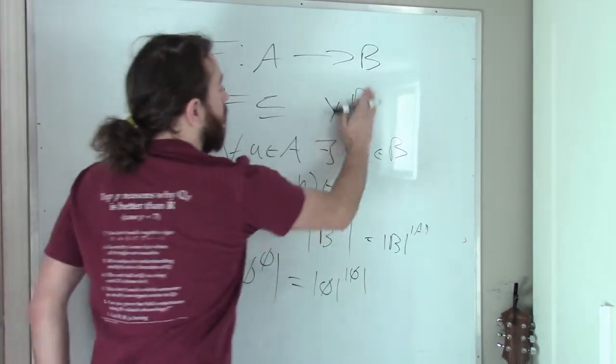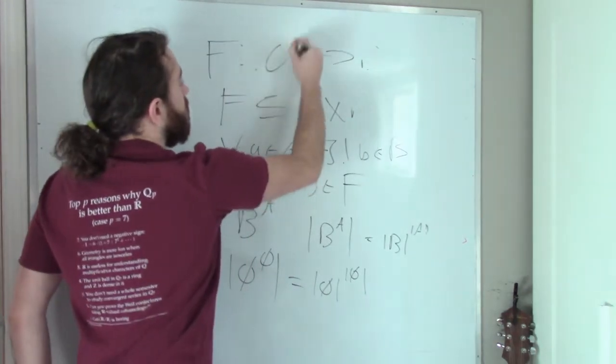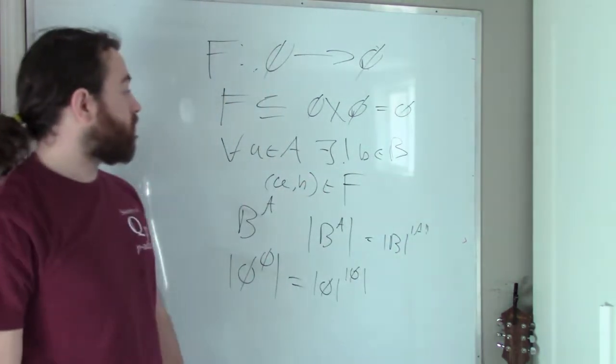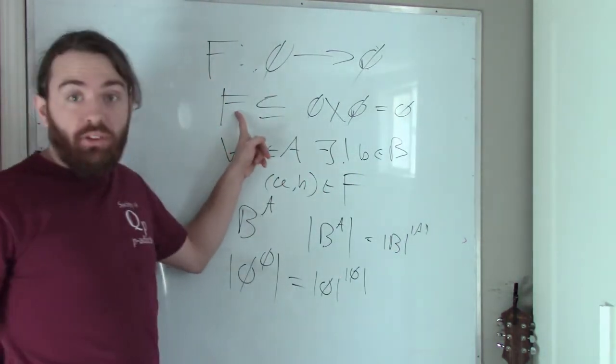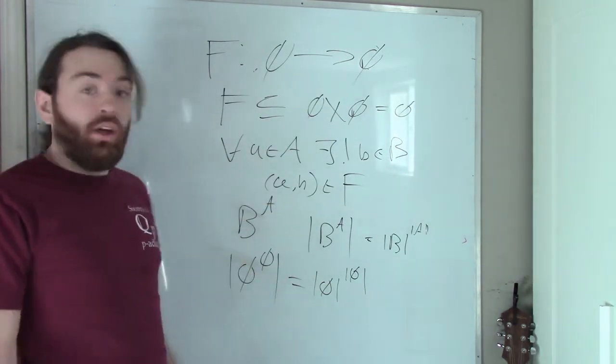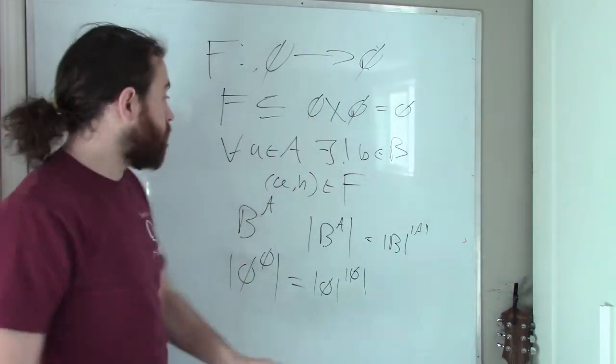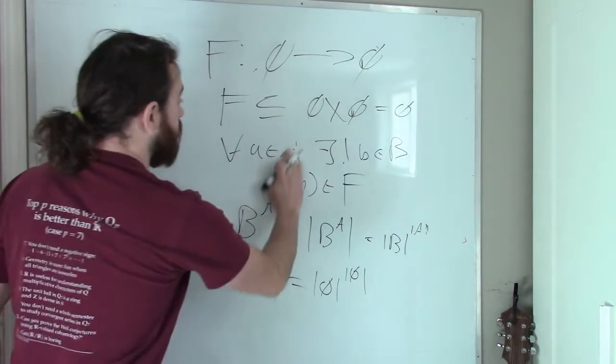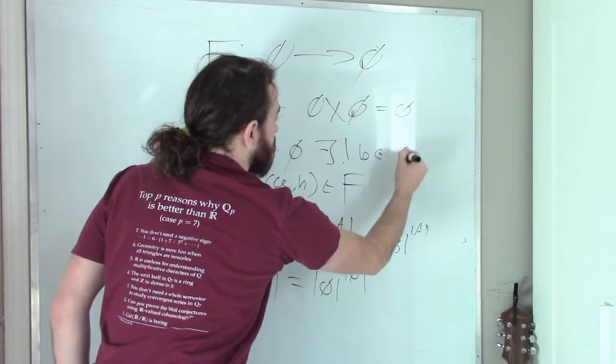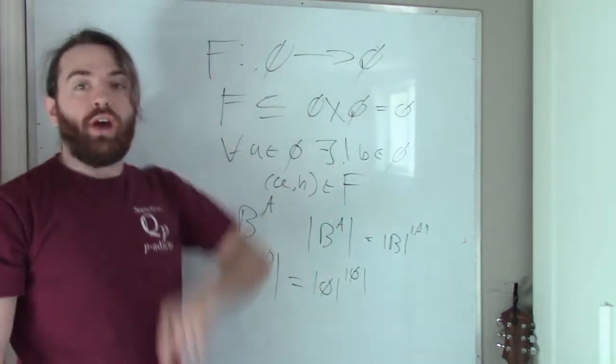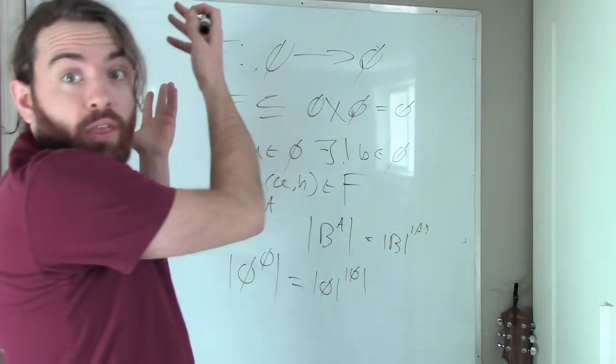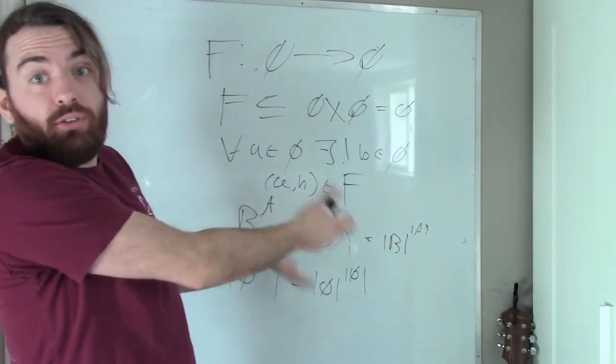Well, if we look up here, our A and B, these are both the empty set. The Cartesian product of the empty set is simply the empty set. And so the only subset of the empty set is the empty set itself. Ah, so there's one element, there's one function. And then you should just check that for all elements of the empty set, well, now we don't even really need to think about this because this is vacuously true. There's no elements in the empty set. So there you go. 0 to the power of 0 is equal to 1.